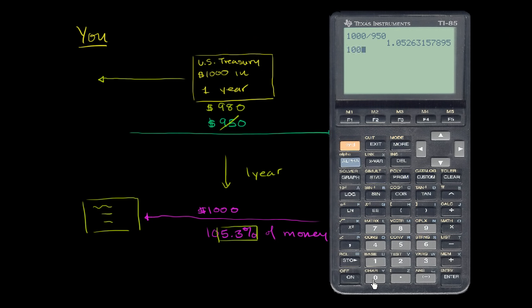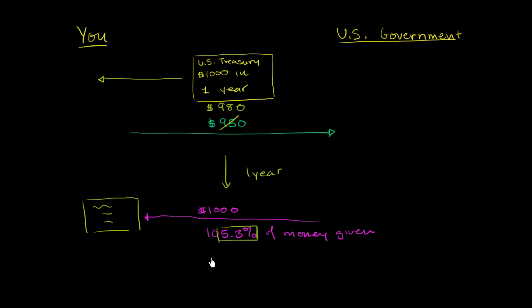So if you pay $980, you're going to get $1,000, and then a year later when you get the $1,000 back, that'll only be 102% of your money.